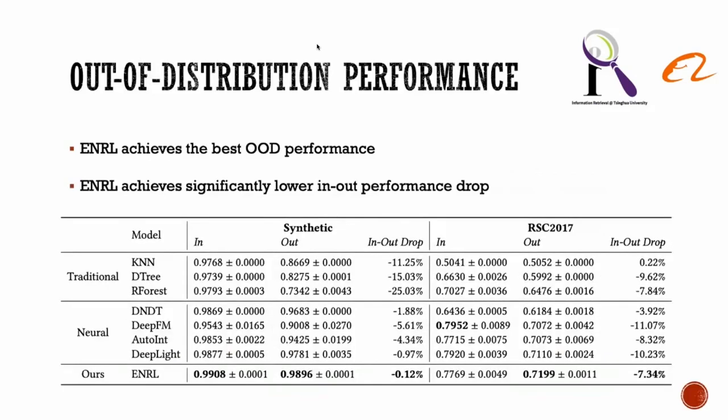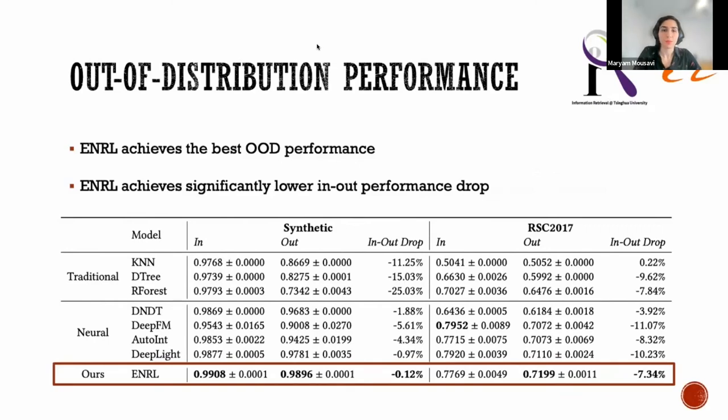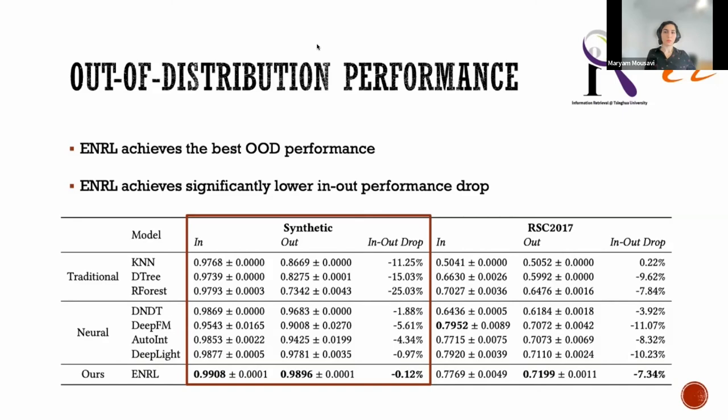The next is the out-of-distribution performance. From the table, we can observe that compared to baseline models, ENRL achieves the best out-of-distribution performance and significantly lower in-out performance drop on both datasets. Specifically, for the synthetic dataset, although decision tree and random forest learn explainable trees, these methods cannot learn the fundamental rules that need a combination of causal features. On the other hand, although neural models capture higher-order crossing features, they can be impacted by the spurious features, which causes the in-out performance drop.